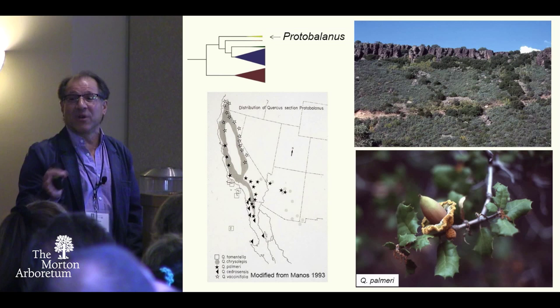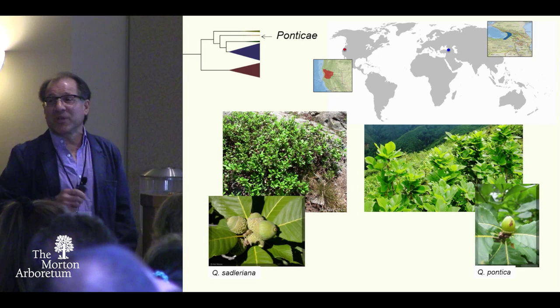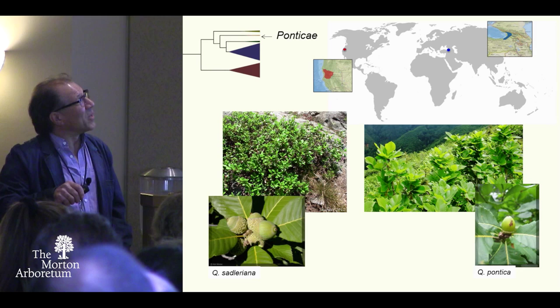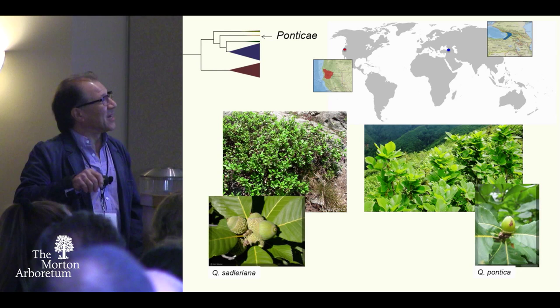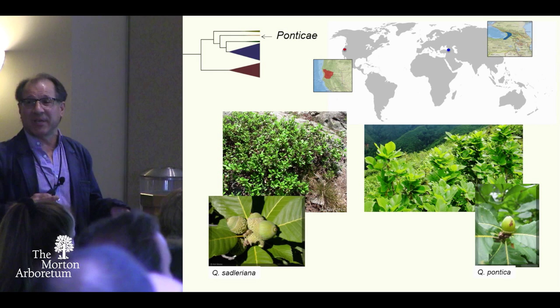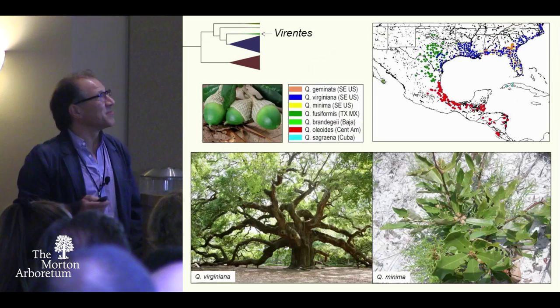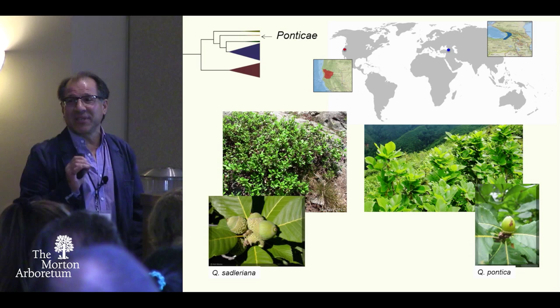Ponticea. This is one of the more exciting bits of our puzzle in that our one species here in western North America has its closest relative near Turkey in central western Asia — and that's Quercus pontica. These species are nearly dead ringers for each other; they're the last of their kind, these two species, with a wildly disjunct distribution and a really interesting pattern of biogeography.